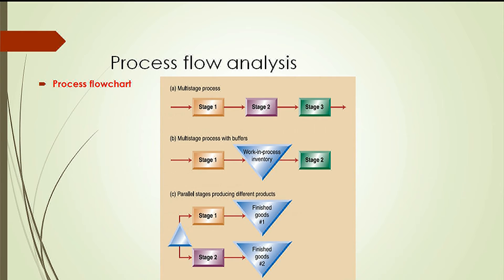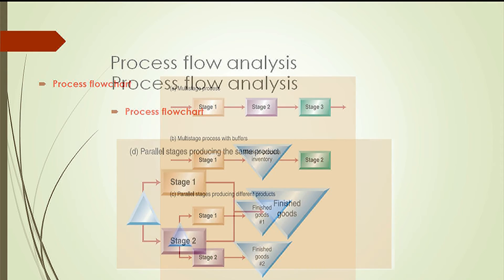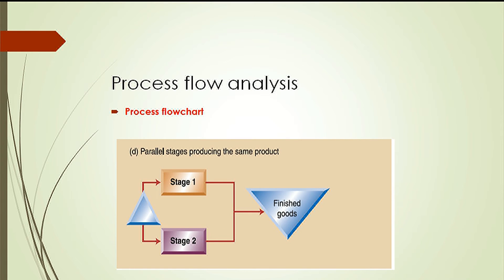Here we can see examples of process flows. The first one is a multi-stage process. The second one is a multi-stage process with buffers. The third one is parallel stages producing different products, and the fourth is parallel stages producing the same product.